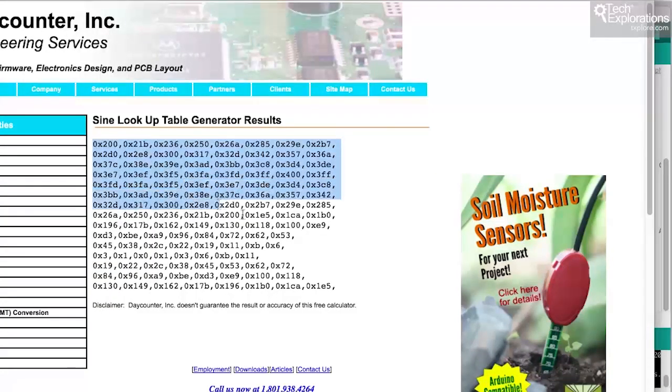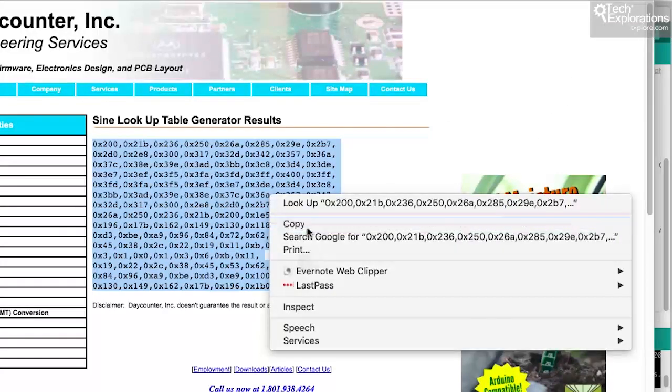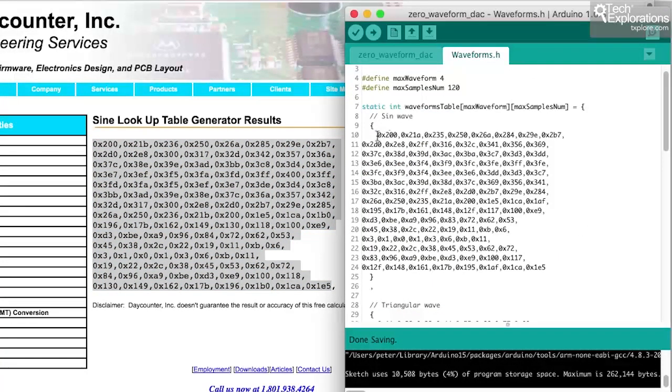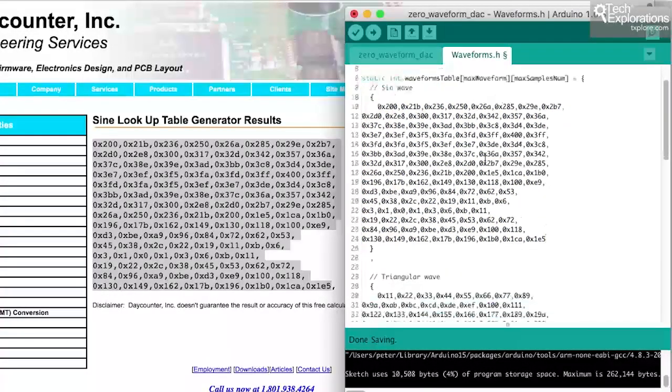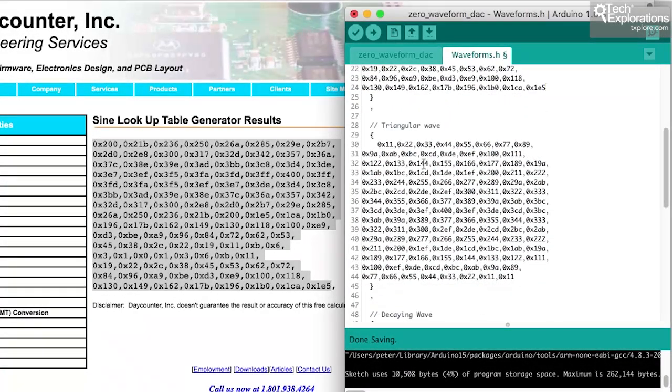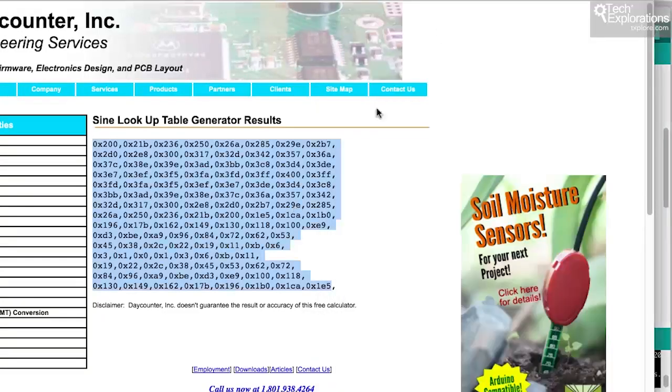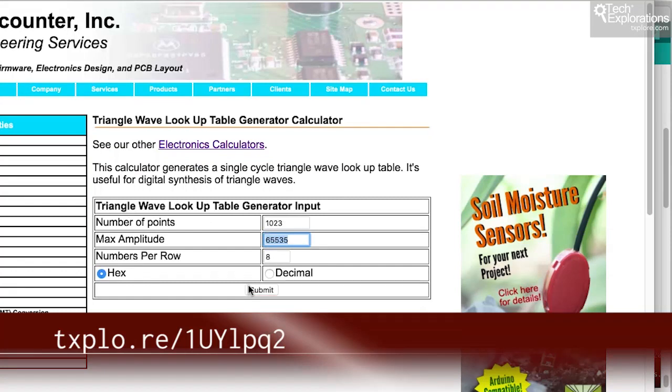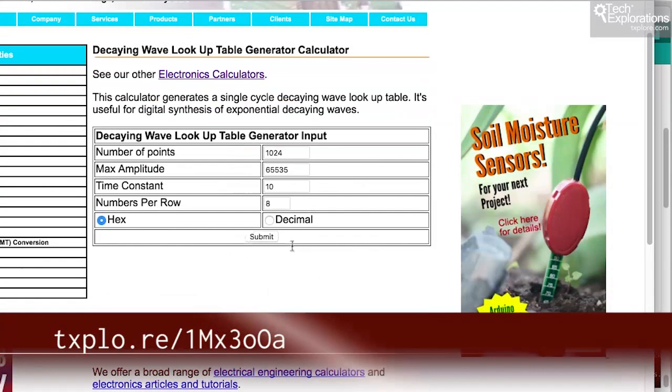And this is a sine wave with 120 individual points along the wave. I can copy that, and I can paste it into my waveform at this location here, and there's my sine wave, and I can do the same thing for triangular. There's a calculator here to do triangular waveforms and also a decaying.